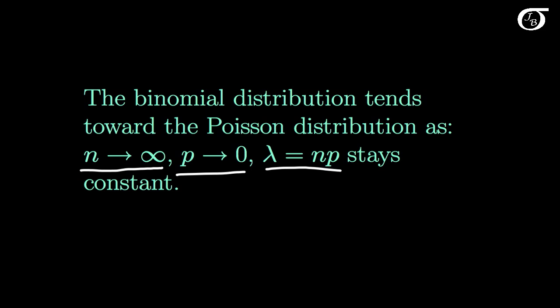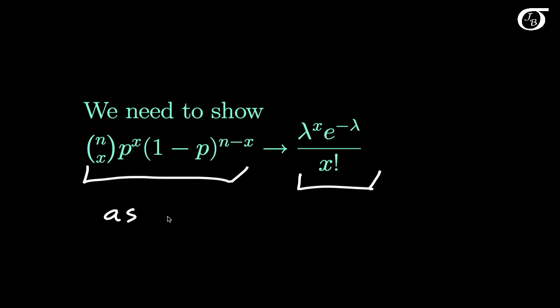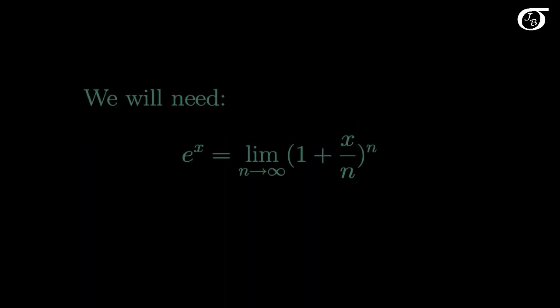Now let's look at a proof of this. We need to show that the binomial distribution tends to the Poisson distribution as n tends to infinity and lambda equals n times p is constant. We are going to need this relationship, which I am going to take as a given. This is one of the ways of expressing e to the x, and it's going to come up in this proof.